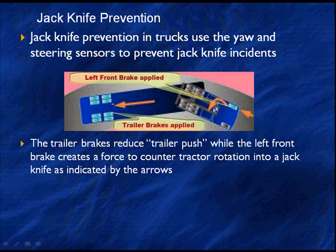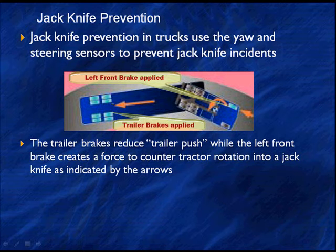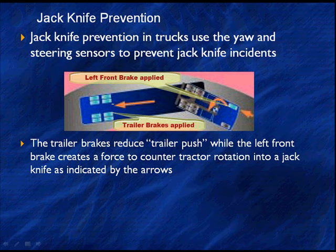We're going to have jackknife prevention, and trucks use the yaw rate and steering sensor to keep these events from occurring. The trailer brakes reduce the trailer push — the trailer is being slowed and pulling back rather than pushing — while the left front brake creates a force to counter the rotation of the tractor into a jackknife, as indicated by the orange arrows. Applying the brake causes the tractor to rotate back to the left, keeping it out of the jackknife. This system reduces jackknife by 67% — two-thirds of all jackknifes are prevented by this.